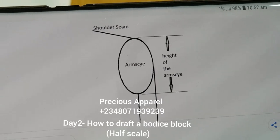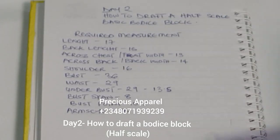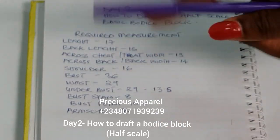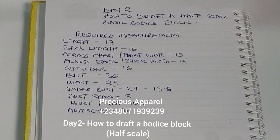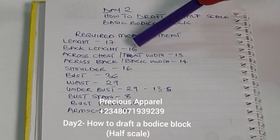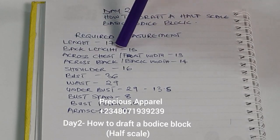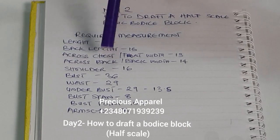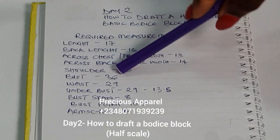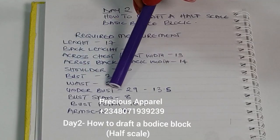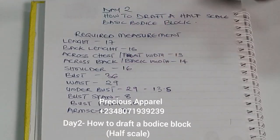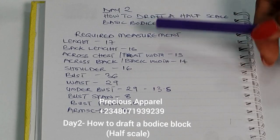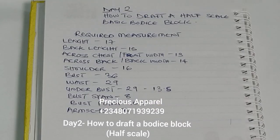These are all the required measurements we need — and I'll be using these measurements throughout the tutorial. The only thing I'll be adding when adjusting to full scale is the waist-to-hip and hip measurements. We need: front length, back length, across chest (front width), across back (back width), shoulder measurement, full bust circumference, waist measurement, under bust measurement, shoulder-to-under-bust (13.5 inches), bust point — which is nipple-to-nipple — shoulder-to-nipple measurement, and the arm's eye measurement.